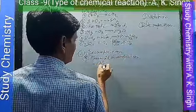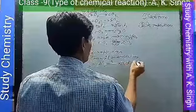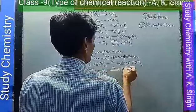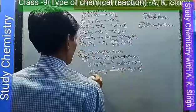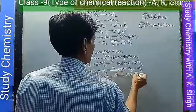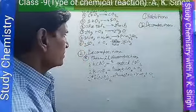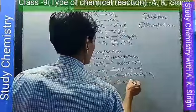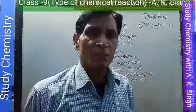Examples of thermal decomposition: potassium chlorate decomposes on heating to form potassium chloride and oxygen. Potassium nitrate decomposes on heating to form potassium nitrite and oxygen. Lead nitrate decomposes on heating to form lead oxide, nitrogen dioxide, and oxygen. Copper carbonate decomposes on heating to form copper oxide and carbon dioxide. Such reactions are called thermal decomposition reactions.